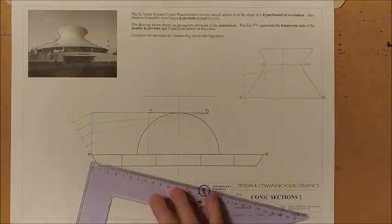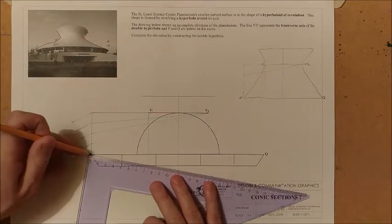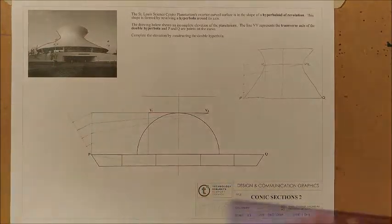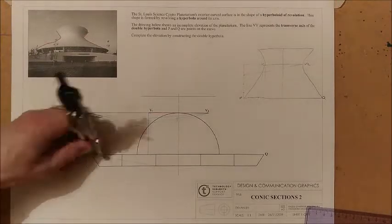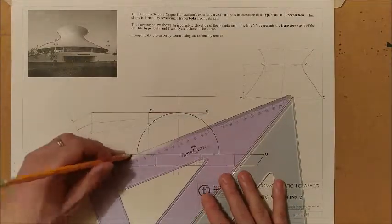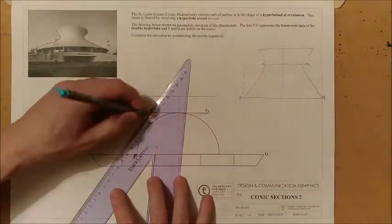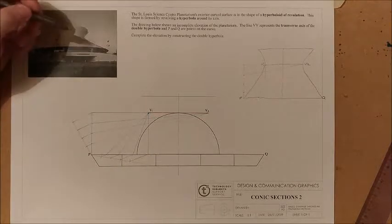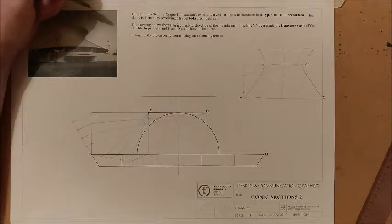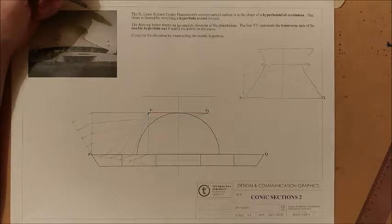I'm going to do the same thing now, divide that into four equal spaces, and then we'll project those points back up to the vertex 1. And now it's a matter of plotting your points along that curve and then mirror them up towards the top. I'm going to do that now.